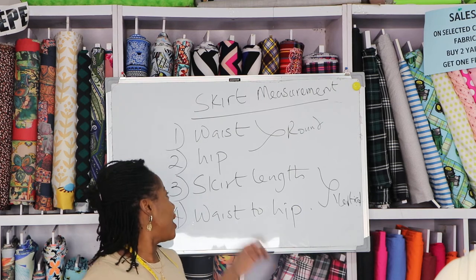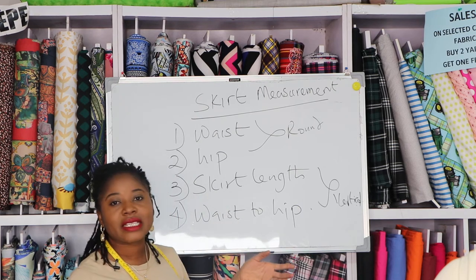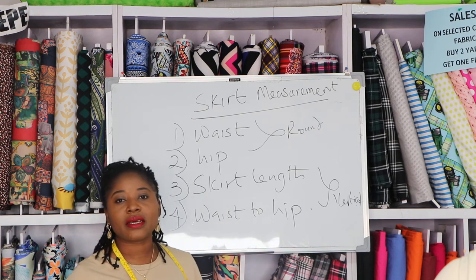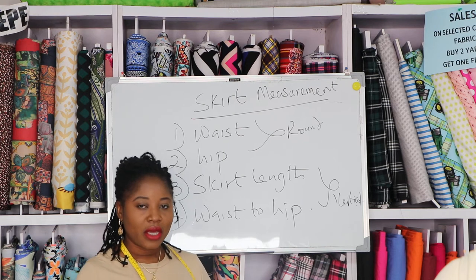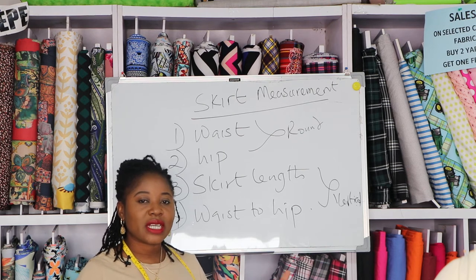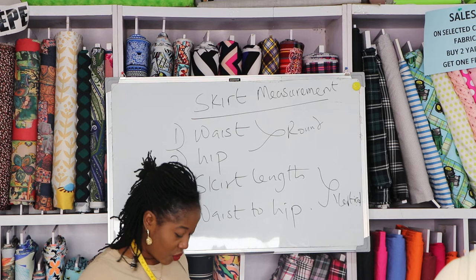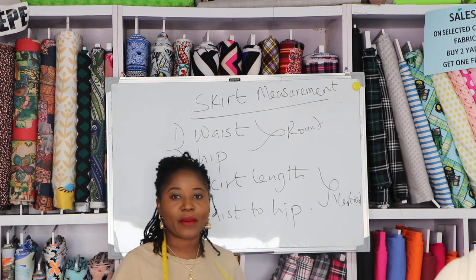The hip is the largest area of your bum area. The skirt length is the desired length you want for your skirt. And the waist to hip is the distance between your waist and your hip.